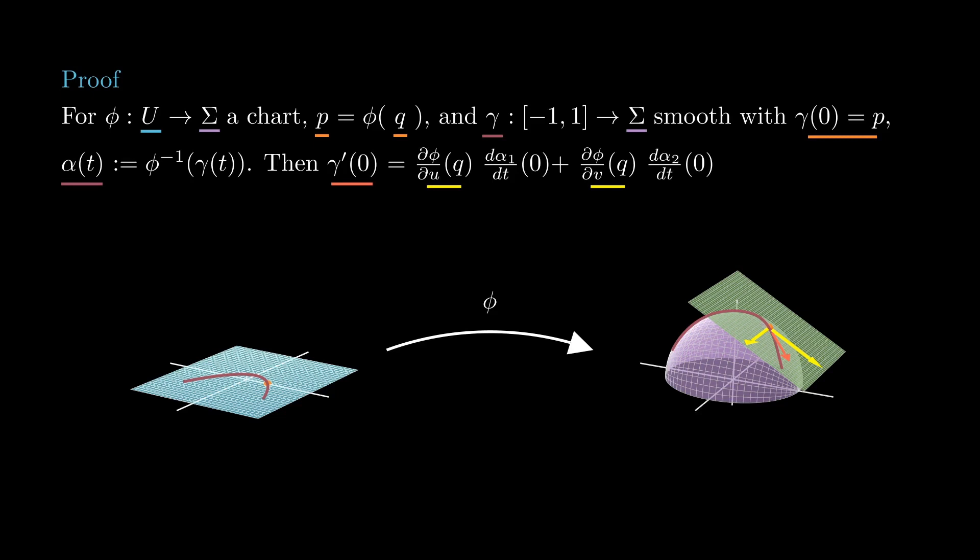This concludes the proof that the tangent plane to sigma at p coincides with the set of all velocities of curves in sigma passing through p.